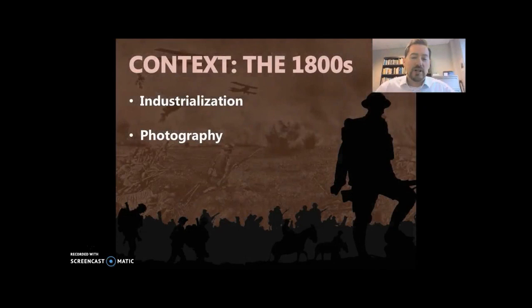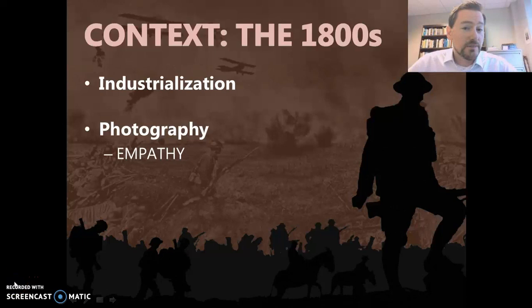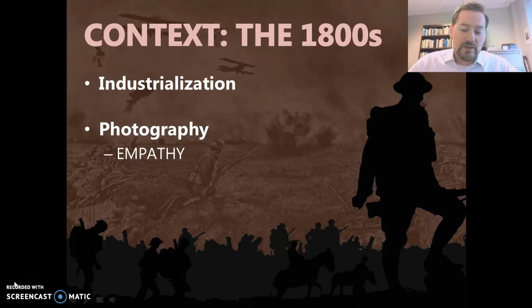The point I want to get to about photography and why it matters is that photography lends itself to empathy. When we see a real person — a human being just like us — either suffering or dying or, in some cases, a deceased person, it can flare up certain feelings within us. In some cases, that can lead to empathy, where we put ourselves in their place and try to understand their perspective. This is going to have an impact on the rules of war that are coming and why nations, especially in the West, are coming together in the 1800s to put restrictions and limitations on war — they're beginning to see just how terrible war can be.